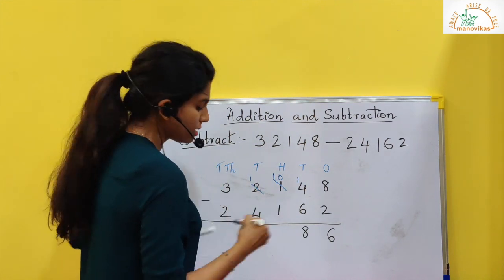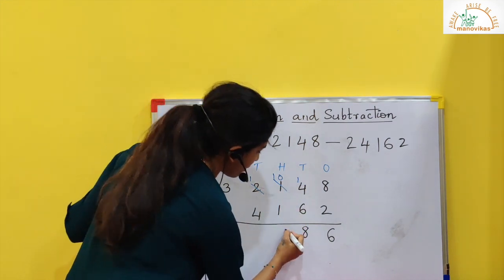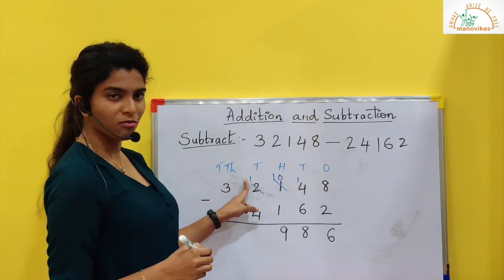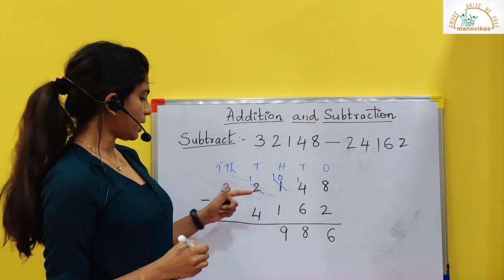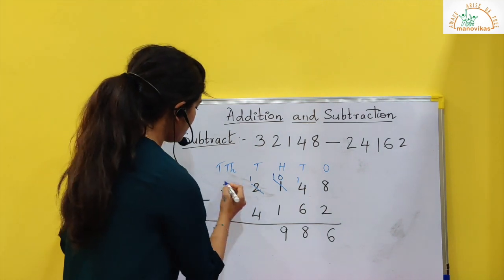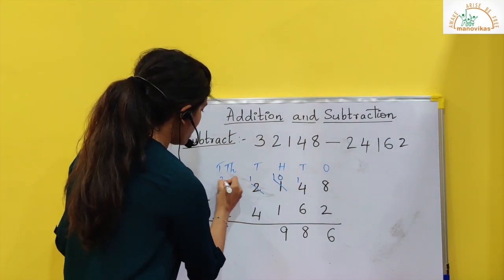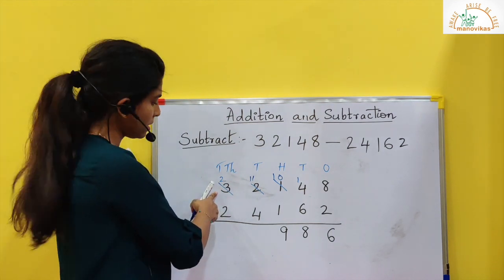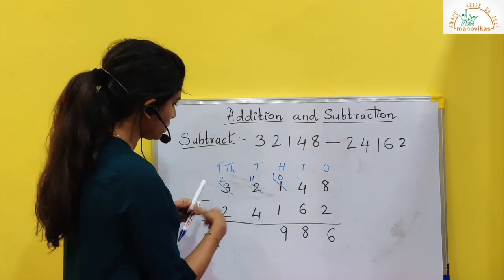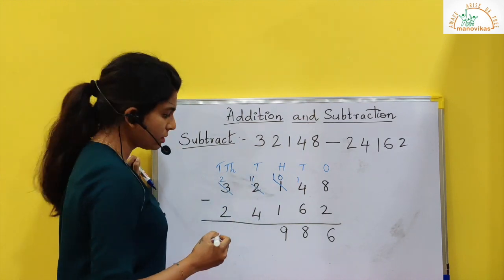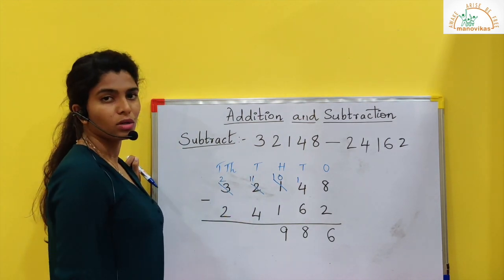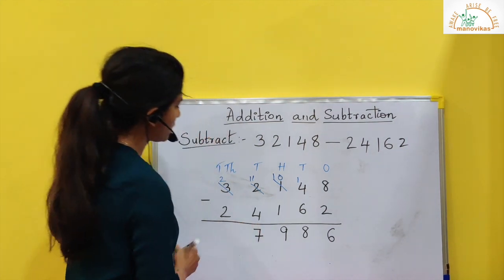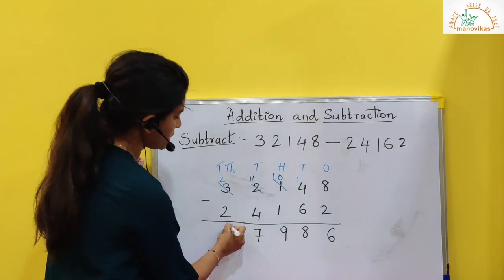Now since I gave away 1 from the hundreds place, there is 0 here. So I cannot minus 1 from 0. So I have to borrow from the thousands place — 1 from the thousands place. So this became 1 and this became 10. So 10 minus 1 is 9. Again, I cannot minus 4 from 1. So what I do here? I borrow 1 from the ten thousands place. Here it becomes 2 and here it becomes 11. 11 minus 4 is 7. 2 minus 2 is 0.